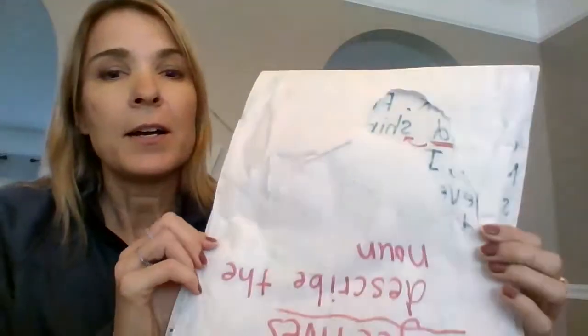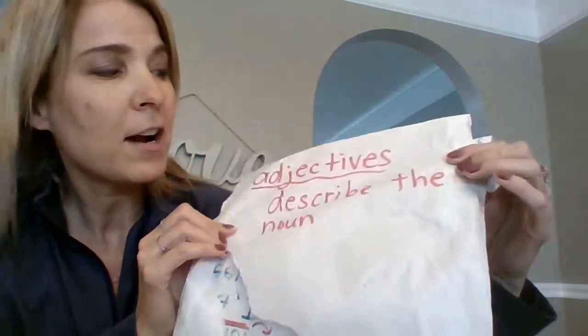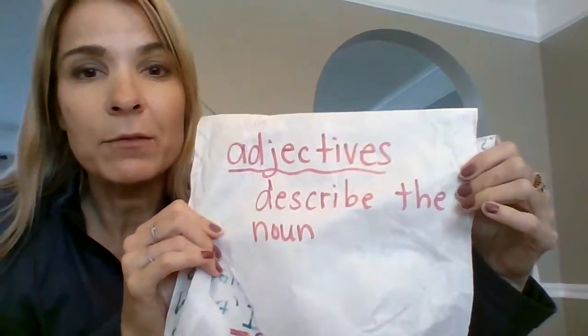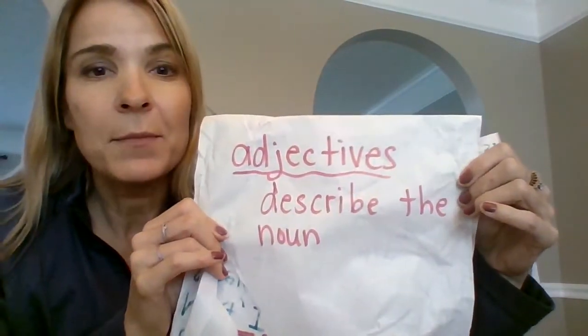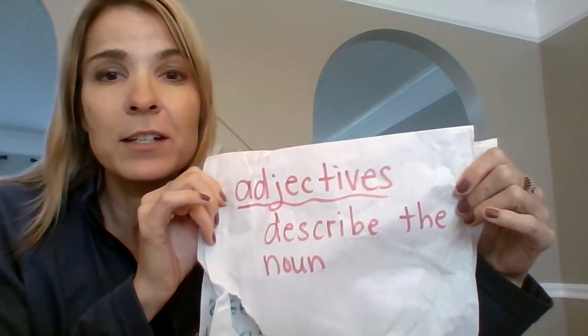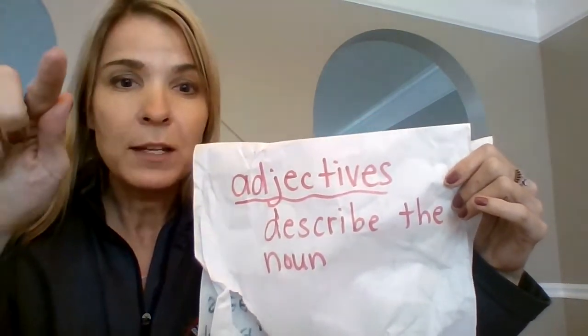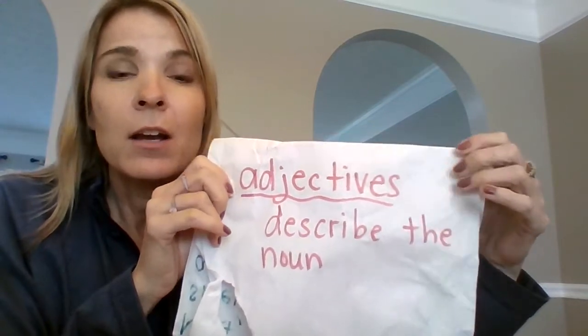First let me share my writing. I didn't make any mistakes this time, but I did underline some adjectives. Adjectives describe the noun. The noun is a person, place, or thing. So I underlined my adjectives and I pointed to the noun, so you can be on the lookout for that.